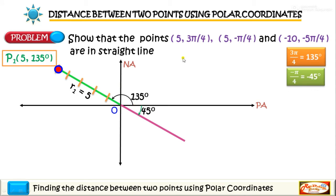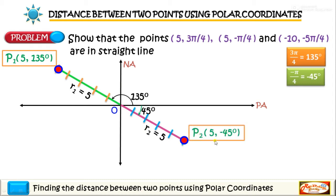Since r2 is 5, we lay off five units distance from the pole: first, second, third, fourth, and fifth unit. This is our point two with coordinates (5, -45°).